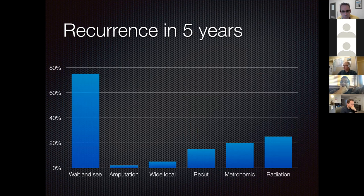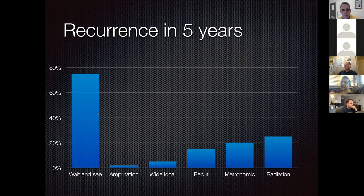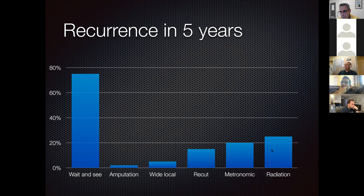To display this in summary: after a dirty margin, wait-and-see yields 75% recurrence overall (approximately 30% for extremity soft tissue sarcomas with marginal excision). Amputation yields near-zero recurrence; wide local excision from the start yields about 5%; recutting yields 15%; metronomic chemotherapy about 20%; radiation 20–25%. All options except radiation can be performed in your own practice. Dirty margins do predict local recurrence—in a study from 1996, clean margins produced only one recurrence, while dirty margins yielded approximately 75% recurrence at about five years.